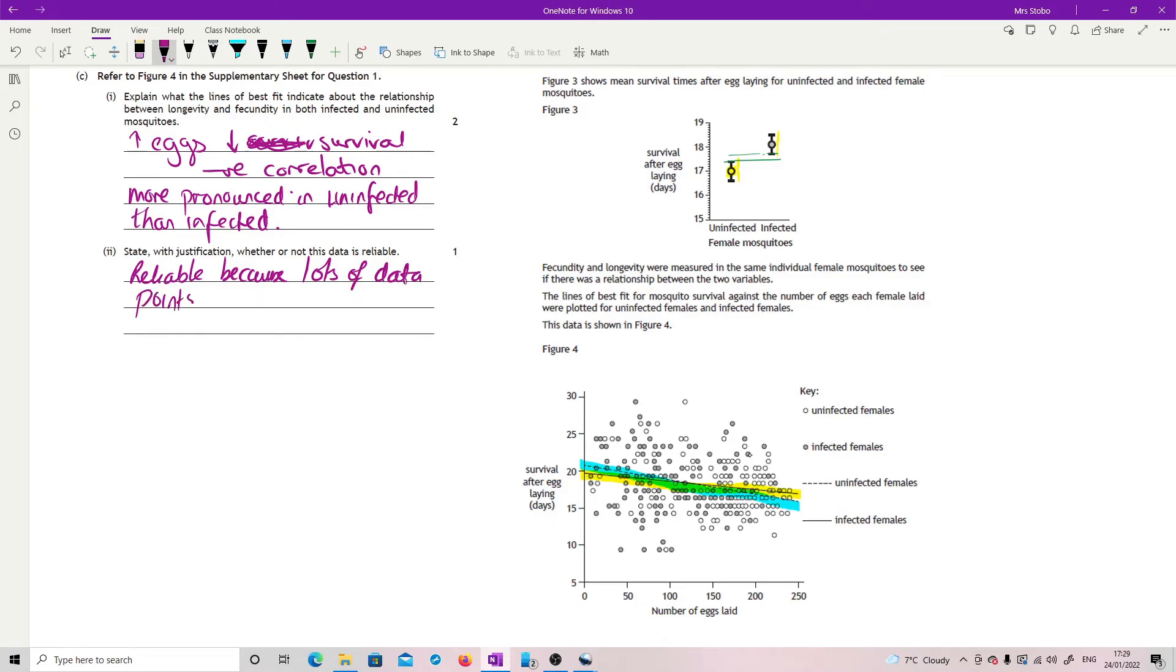And then I went and looked at the mark scheme and they said reliable because large sample, fine. But then they also said not reliable because you've got lots of points quite far off the line. So basically either was fine as long as you could justify.